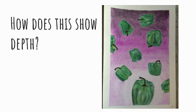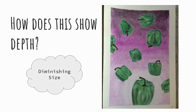Let's take a look at some previous student examples. How does this show depth? If you guessed diminishing size, that would be correct. Notice how the peppers at the top of the page are smaller versus the object at the bottom, which is larger. Also, let's talk about the background — the backgrounds for these projects are completely up to you. You can put them in a setting, shade them with gradient shading like this artist decided to do, do one solid color, polka dots, zentangles, or even turn them into fish. Whatever works best.